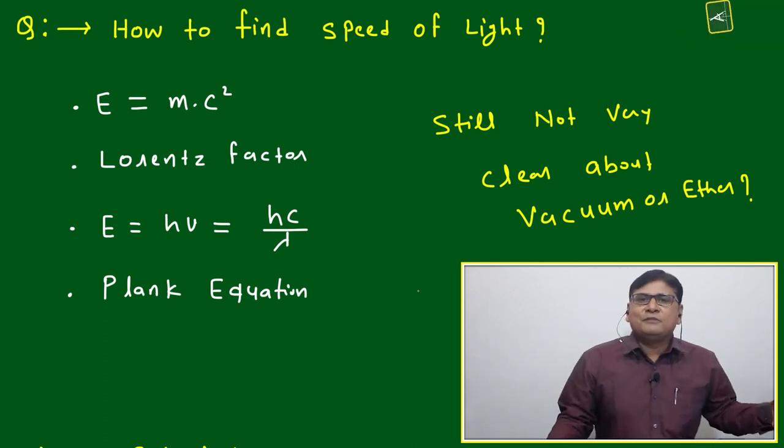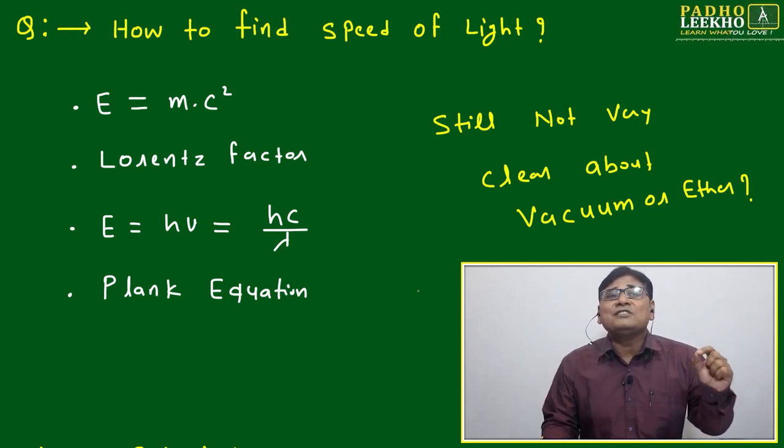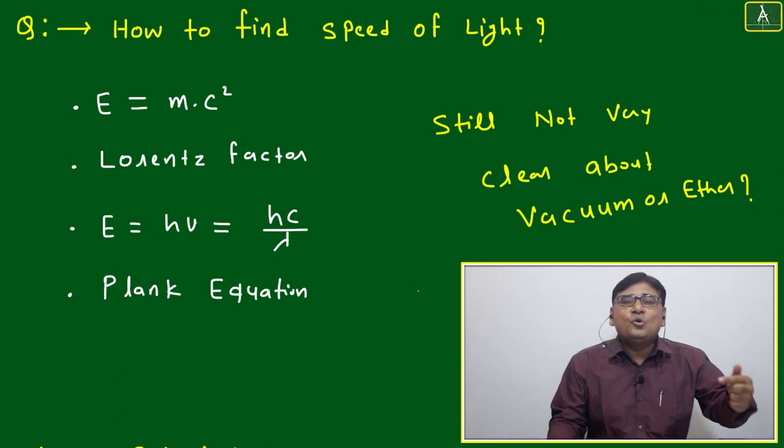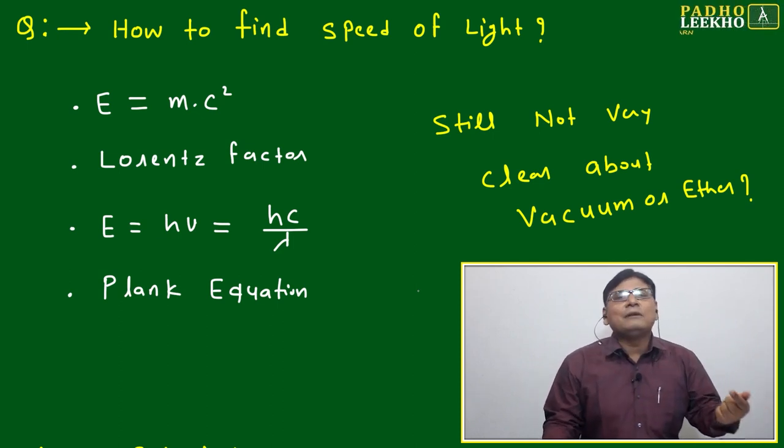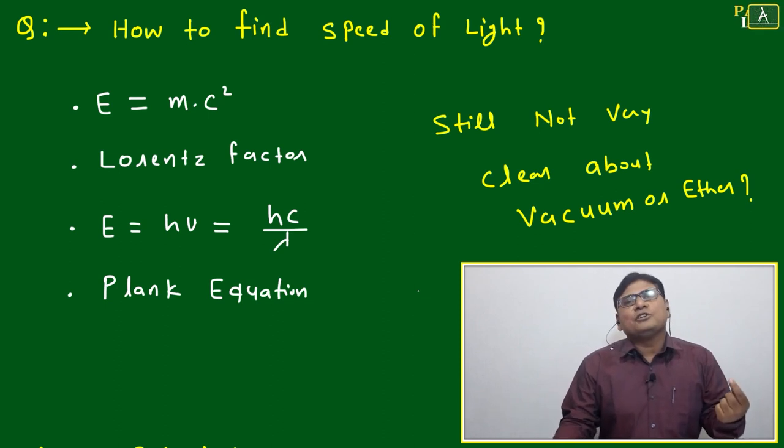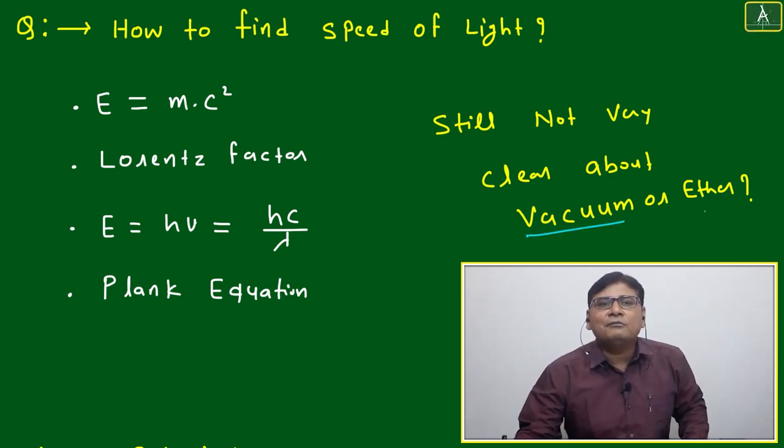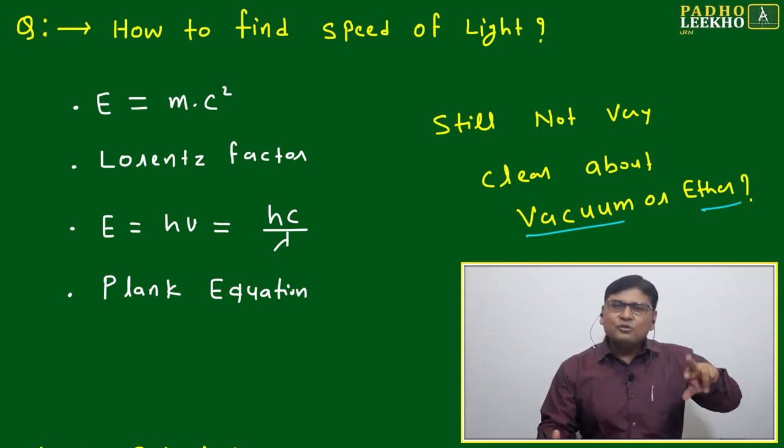But how to find the speed of light? If I ask you, any of the scientists also will not be able to give a very straight answer - how to find the speed of light very easily. Because still we are not clear about what is vacuum and what is ether, and we are totally confused.